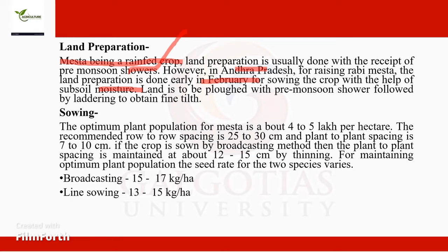The optimum plant population for mesta is about 4 to 5 lakh per hectare. The recommended row-to-row spacing is 25 to 30 centimeters and plant-to-plant spacing is 7 to 10 centimeters. If the crop is sown by broadcasting method, then plant-to-plant spacing is maintained at about 12 to 15 centimeters by thinning.